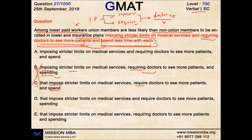It is very important to analyze what things you should keep parallel. Only independent things that share the same theme are kept parallel. If the later element is the result of or a general description about the previous structures, it has to be in a different verb form. So the correct answer here is option D, which keeps 'impose stricter limits on medical services' and 'require doctors to see more patients' beautifully parallel, with 'spending less time with each' as the result in verb-ing form.